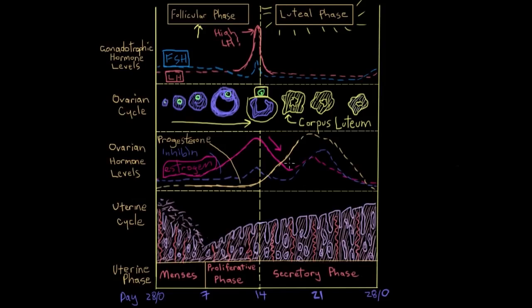Just to clarify though, it still does make some estrogen. It's just not really its primary product. Progesterone is. That's why you see this dip in estrogen here and this uptick in progesterone that gets produced.